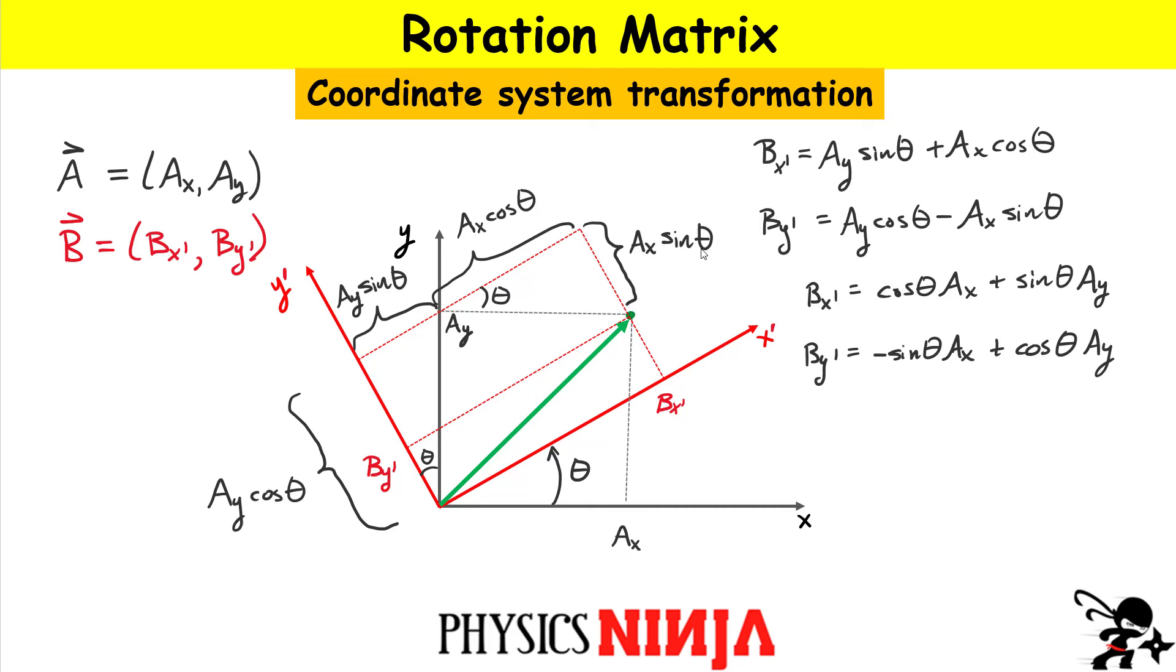AX and then plus cos of the angle theta multiplied by AY. Now you can see right away, you can write this in matrix and vector form. All right, these are the components of my B vector. And then I can introduce a rotation matrix and that gets multiplied by the components of the global coordinate system, AX and AY.